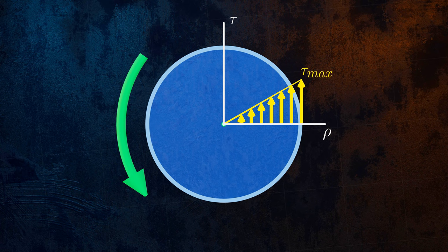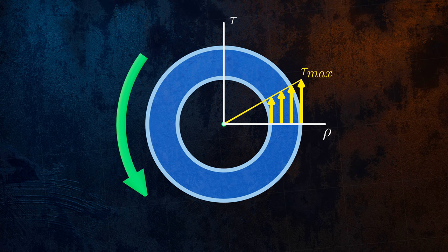This is useful to know because it means that hollow bars are way more efficient at carrying torsional loads, since the central part of a solid bar is only resisting a small part of the total load.